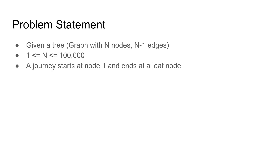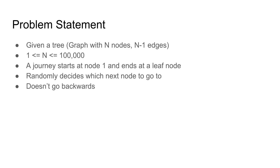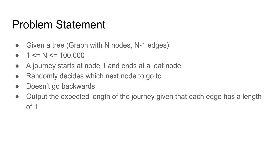You also have a journey. This journey starts at node 1 and ends at a leaf node. For every step in the journey, you randomly decide which next node to go to. However, you do not go backwards — you do not go back up to your parent node. You're supposed to output the expected length of the journey, given that each edge has a length of 1. Essentially, the expected number of edges traversed from node 1 to a leaf node.